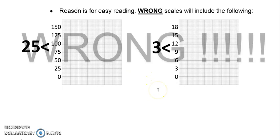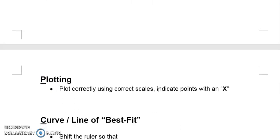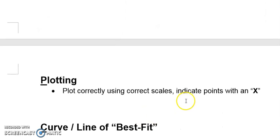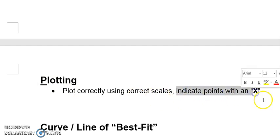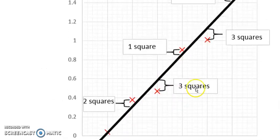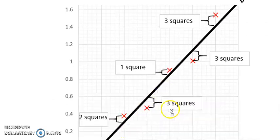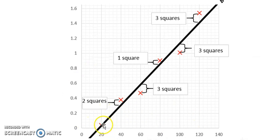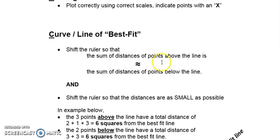The P in SPCAG stands for Plotting. Basically, plot correctly using the correct scales. When indicating data points, use an X mark. For example, all my plotted points are marked with an X on the graph.